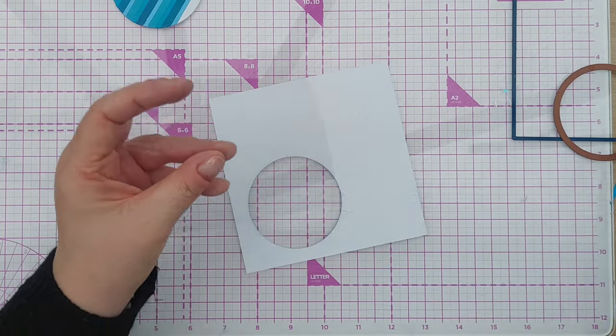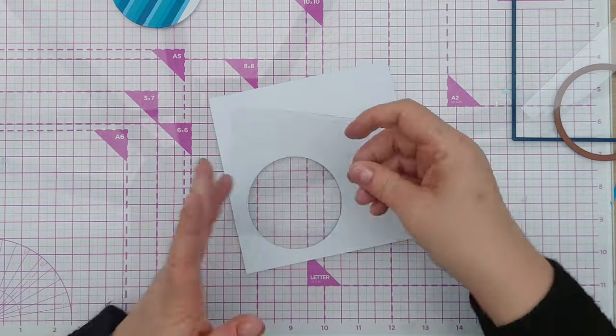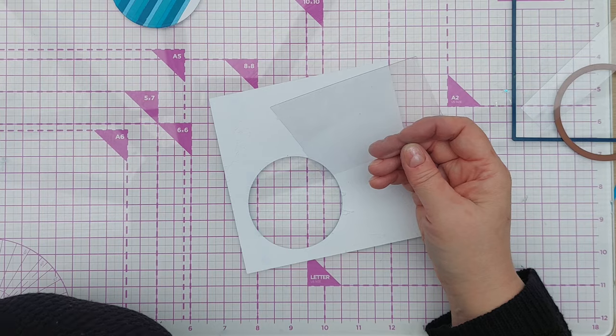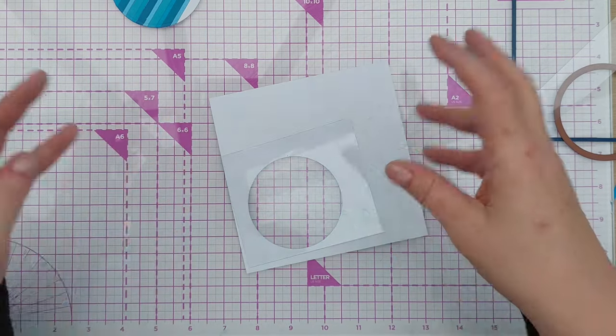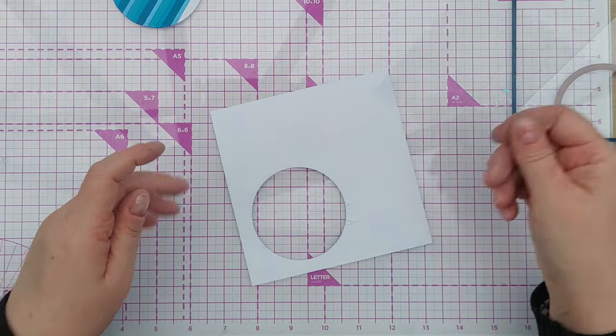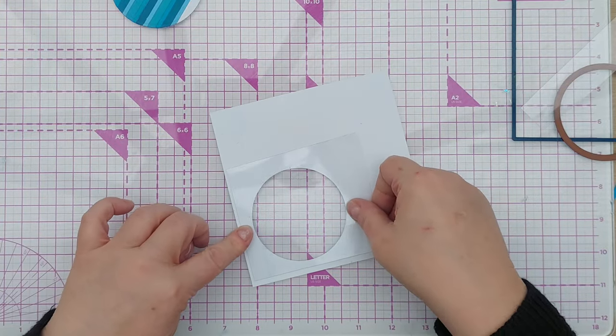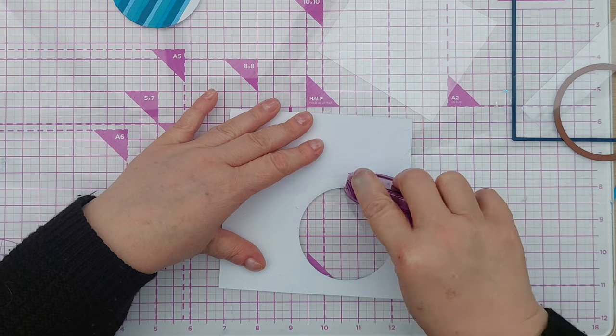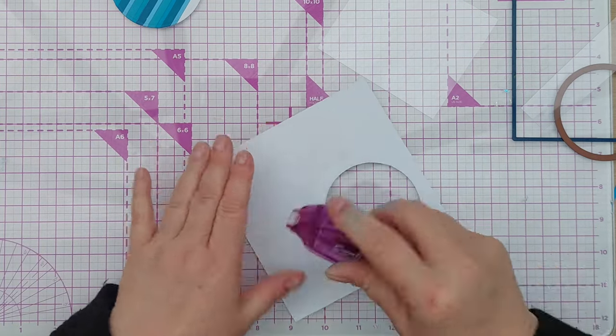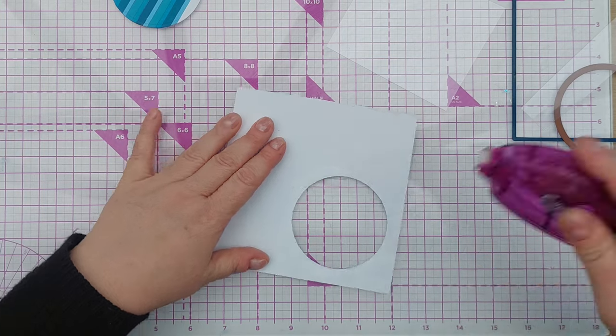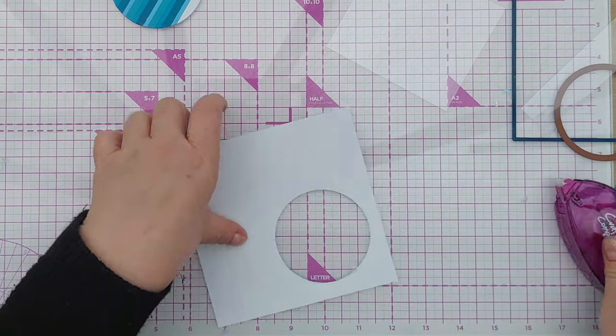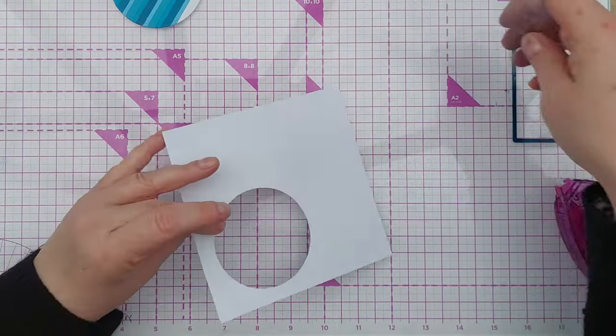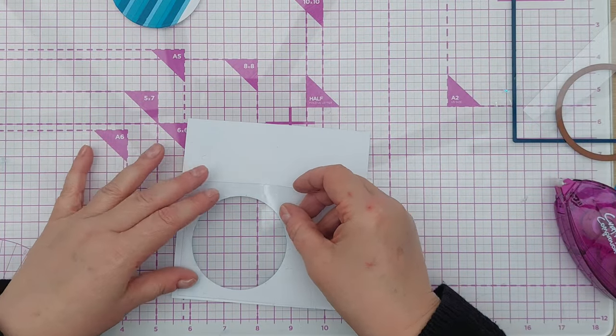If you haven't got any acetate, you can use packaging - the clear plastic windows that come in boxes. I want to adhere the acetate down and I'm going to use this Crafters Companion tape. Make sure there's none poking through, then just pop the acetate over the back there.